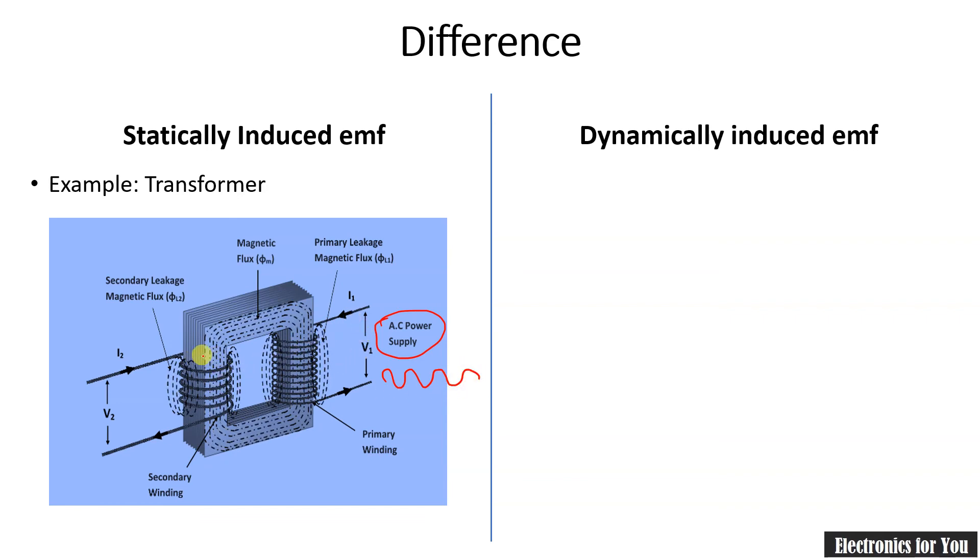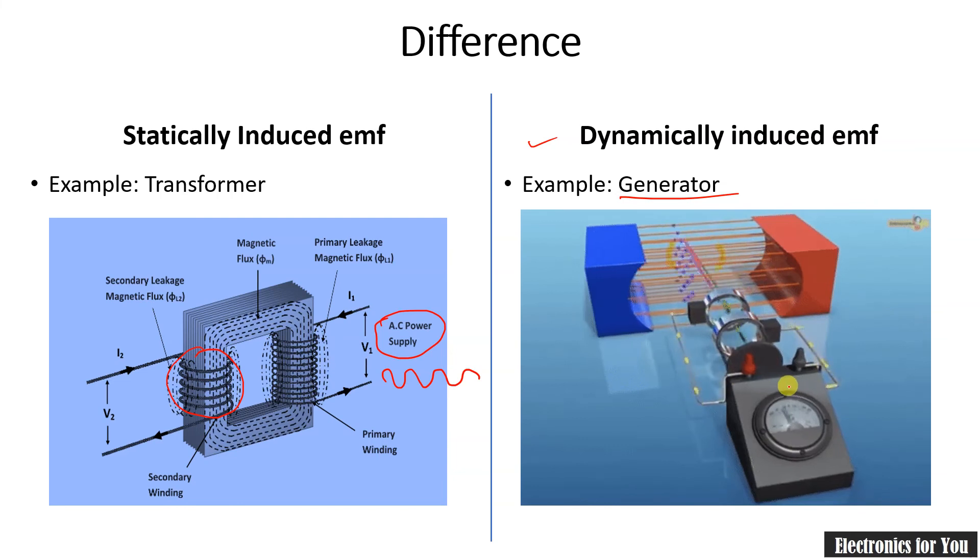In case of dynamically induced EMF, the example is a generator. We know that a generator is a device which converts mechanical energy into electrical energy. In this case, you can see that this conductor is cutting magnetic lines of forces and therefore EMF is generated. In dynamically induced EMF, there is always motion of conductor or magnet, whereas in statically induced EMF, we apply a changing supply voltage and therefore EMF is induced either in the same coil or in another coil.